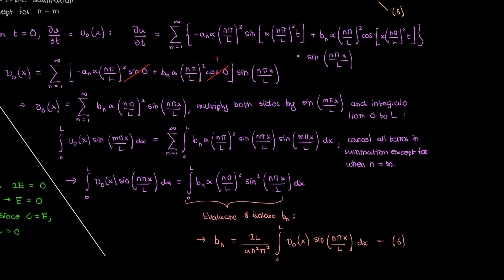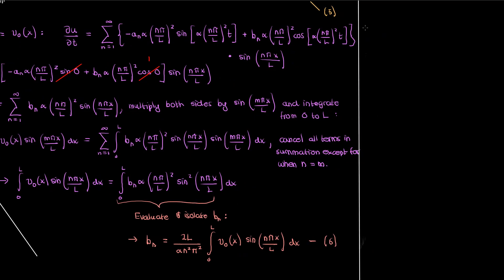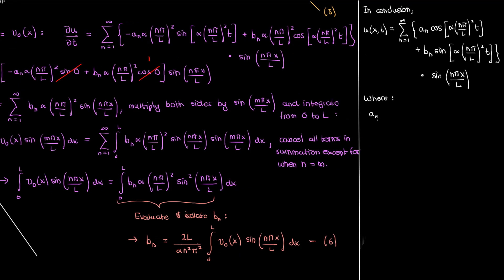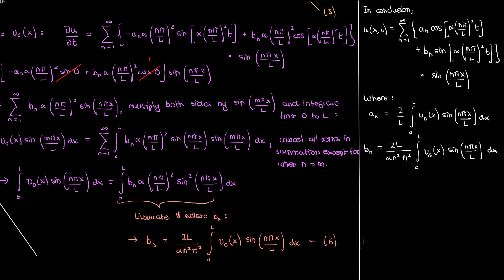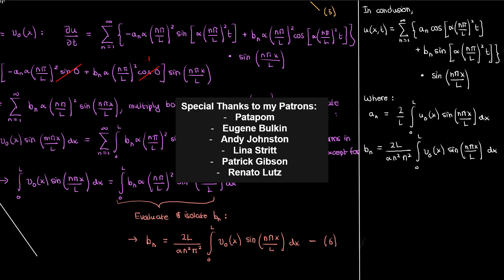Finally, the solution to the fourth order PDE describing the vibrating beam with homogeneous boundary conditions in u and the second partial of u is given by the sum over n of u sub n as a function of x and time, where the coefficients a sub n and b sub n are obtained from the initial conditions u naught of x and v naught of x. That's the general solution for the vibrating beam fourth order partial differential equation. Thanks for watching — I'd like to thank the following patrons for their support, and if you enjoyed the video feel free to like and subscribe. This is the Faculty of Khan signing out.